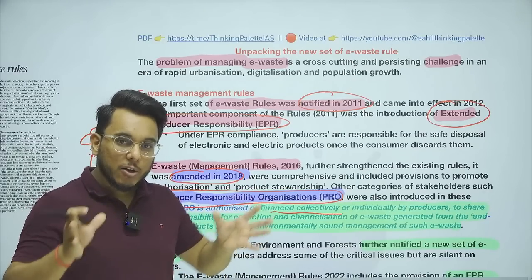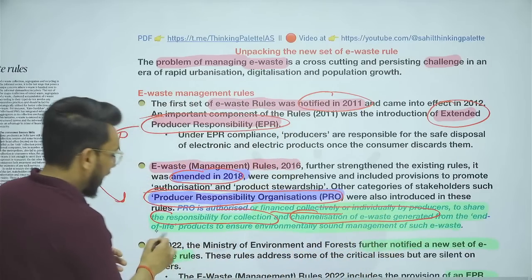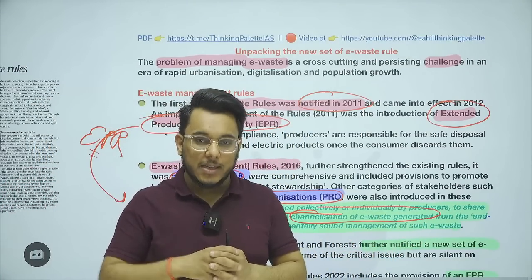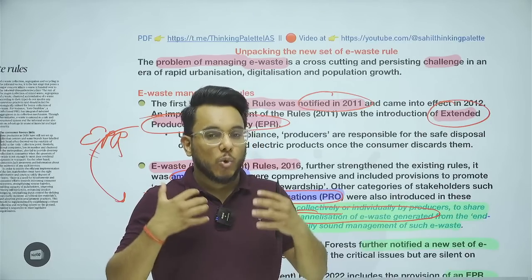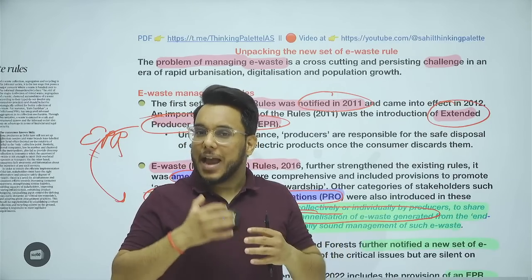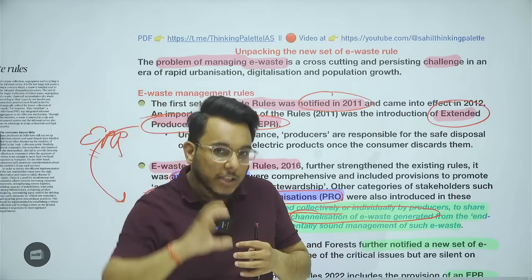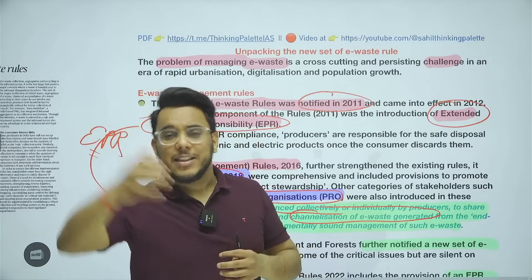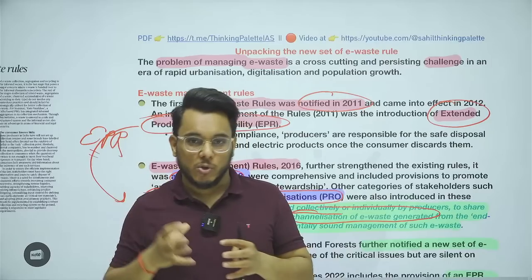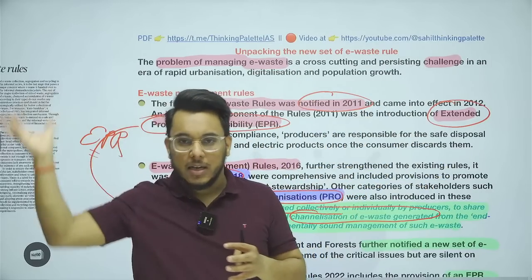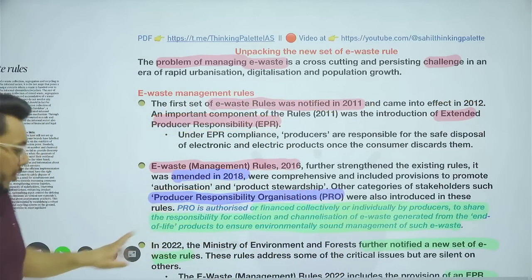After the 2011 rules, new e-waste management rules were notified in 2016 and amended in 2018. Their most important feature was the Producer Responsibility Organization (PRO). PROs are collectives financed by producers — for example, five mobile manufacturing companies can form an organization to share the responsibility of collecting and channelizing e-waste from end-of-life products. If Samsung sold one lakh phones in 2020 with a five-year lifecycle, by 2025 they need to collect those back. Rather than each brand separately collecting only their brand, they can collectively collect all brands through this shared PRO structure.